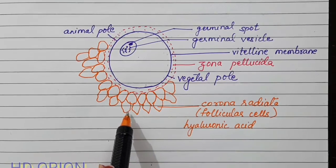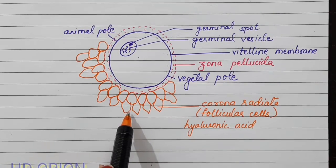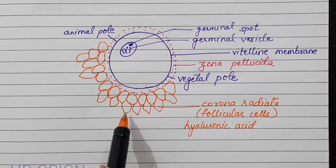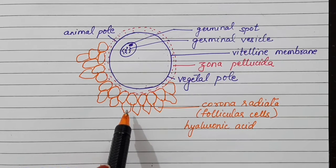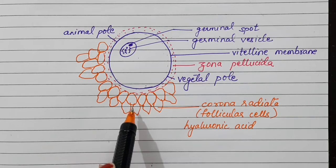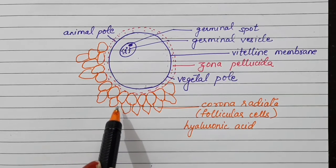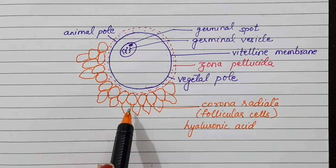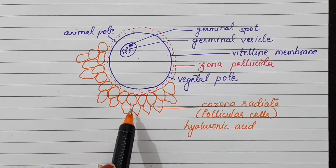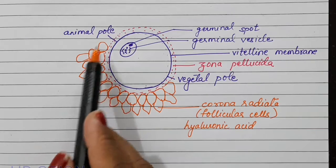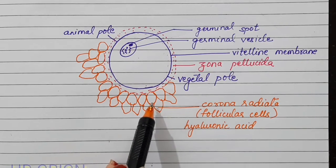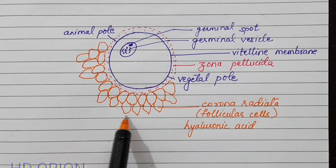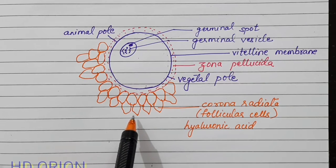Outside the corona radiata there is a membrane which can harden because it is made up of calcium, forming the outer shell. This calcium shell layer is secreted by cells present in the oviduct. The secondary oocyte which we call the ovum does not immediately have this calcium layer.